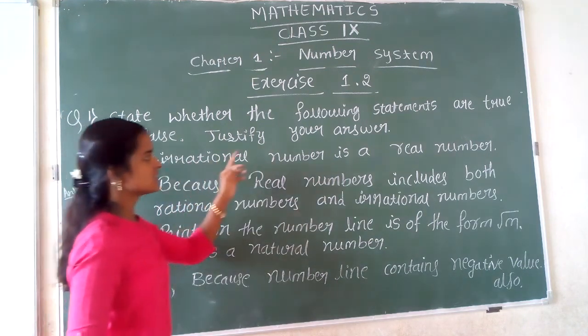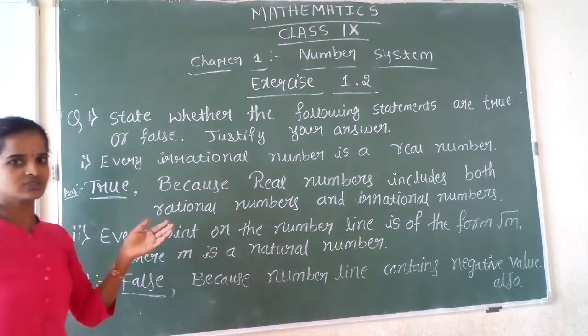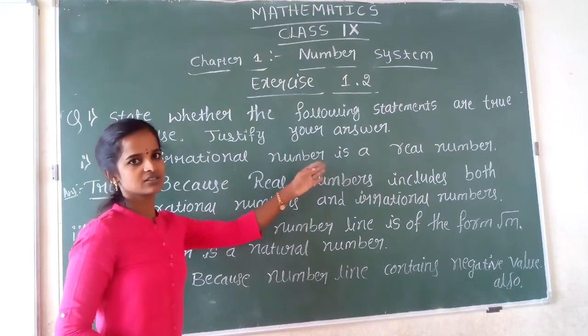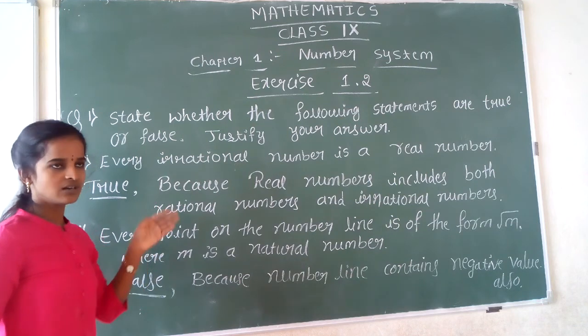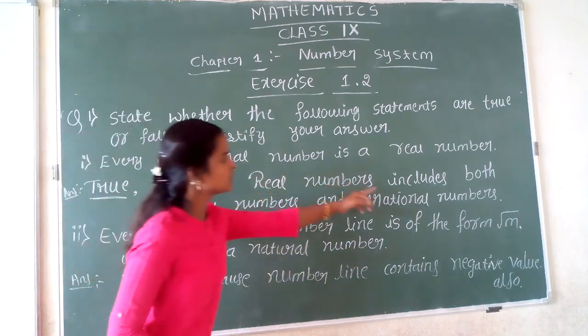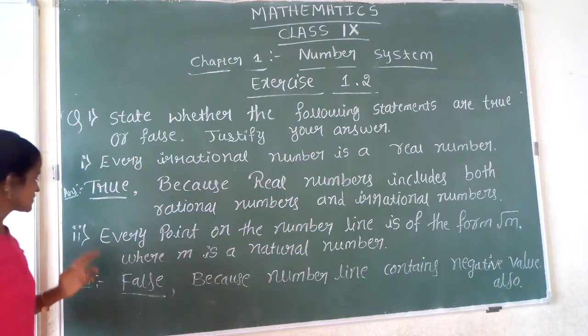The first one: every rational number is a real number. You already know that real numbers contain both rational numbers and irrational numbers. This statement is true because real numbers include both rational numbers and irrational numbers. I will go to the next question.